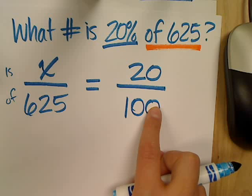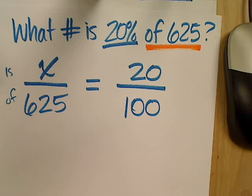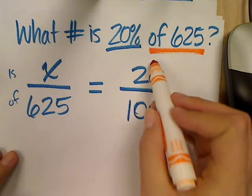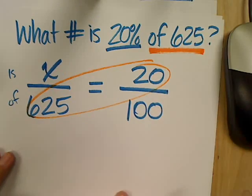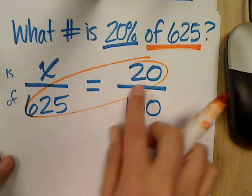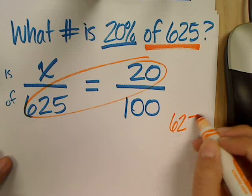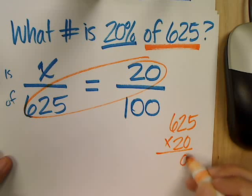Okay, what's my next step? Do I multiply straight across? Cross multiply. Okay, cross multiply. So, I have 625 times 20. If I don't know it off the top of my head, pull to the side, multiply it out.